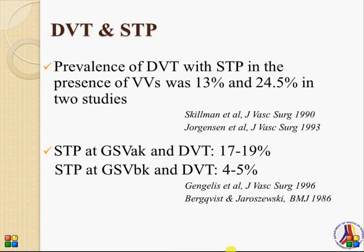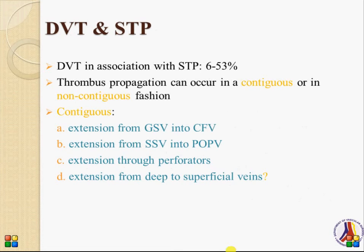It is not uncommon for superficial thrombophlebitis to coexist with deep venous thrombosis. In two studies, the rate was 13% in one and 24.5% in the other. It was more common when the great saphenous vein trunk and the above-knee segment was affected.